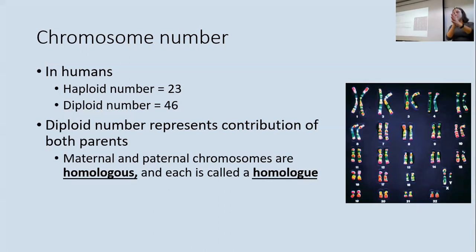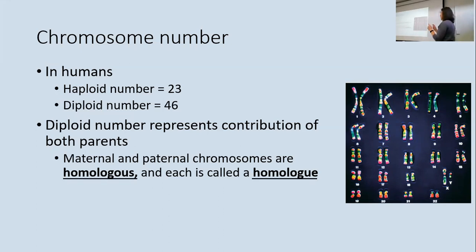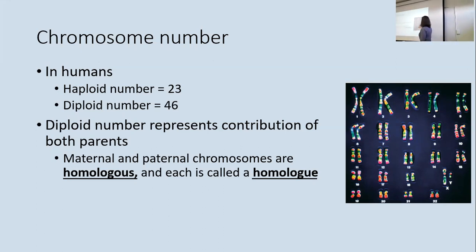For example, for chromosome 1 you have a maternal copy and a paternal copy, and they are homologous — they contain the same genes. Some genes for eye color, hair color, or height are there; they'll be slightly different versions since your parents are different people, but those chromosome 1s carry the same genes. Each matching pair is called a homologous pair of chromosomes.